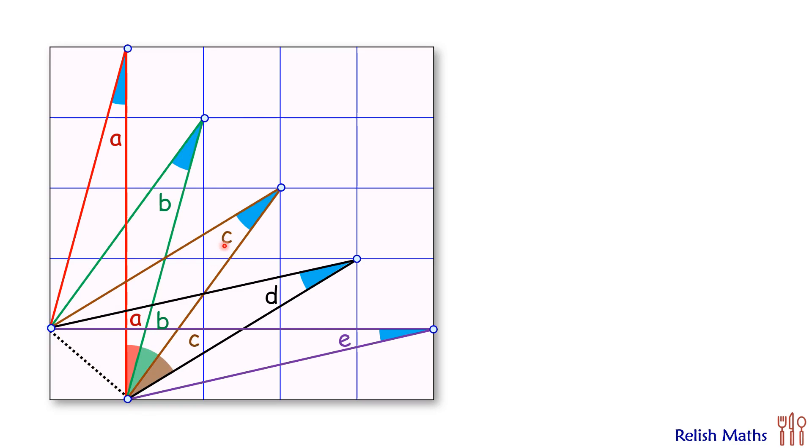Same way, we can say that this angle here which is formed will be equal to angle c, this will be equal to angle d, and this angle here will be equal to angle e.